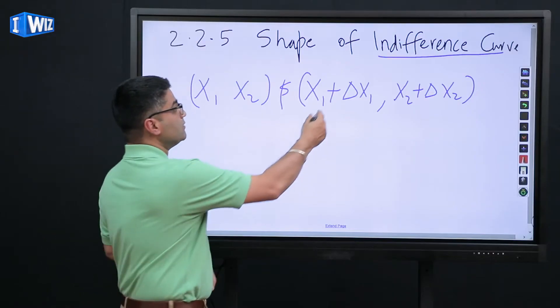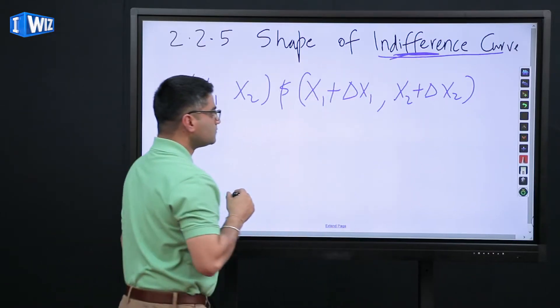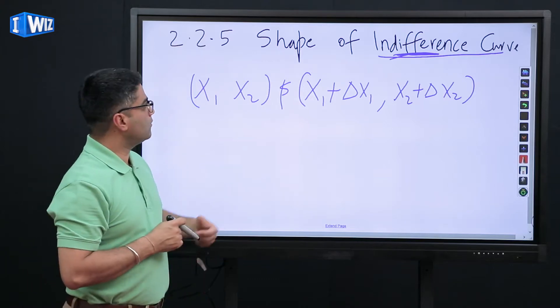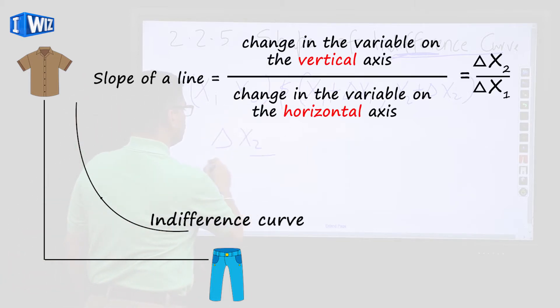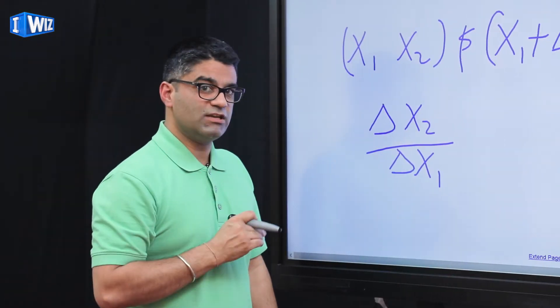If you're indifferent between these bundles, then the slope which is the shape of the indifference curve between these two points is going to be a straight line. And if this delta x1 and delta x2 are small enough, then the slope between these two bundles is just going to be change in x2 over change in x1. And this is a ratio which you should have seen before.